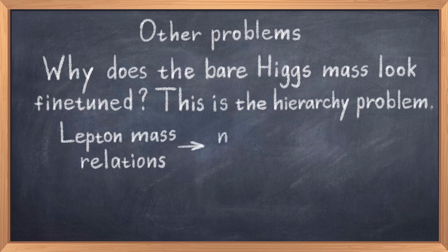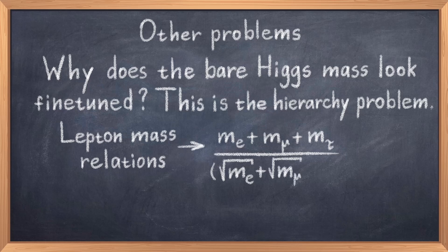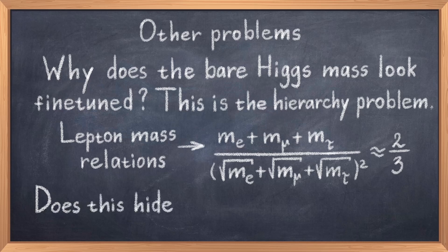One interesting observation made in 1981 is that if you consider the masses of the charged leptons, you can construct a ratio where you have the mass of the electron plus the mass of the muon plus the mass of the tau particle. Then you divide by, in parenthesis, the square root of the mass of the electron plus the square root of the mass of the muon plus the square root of the mass of the tau particle. And then you have all that squared, and this is roughly equal to 2 thirds. This ratio is within experimental error equal to 2 thirds, which might suggest that there are some hidden relations the standard model cannot explain.